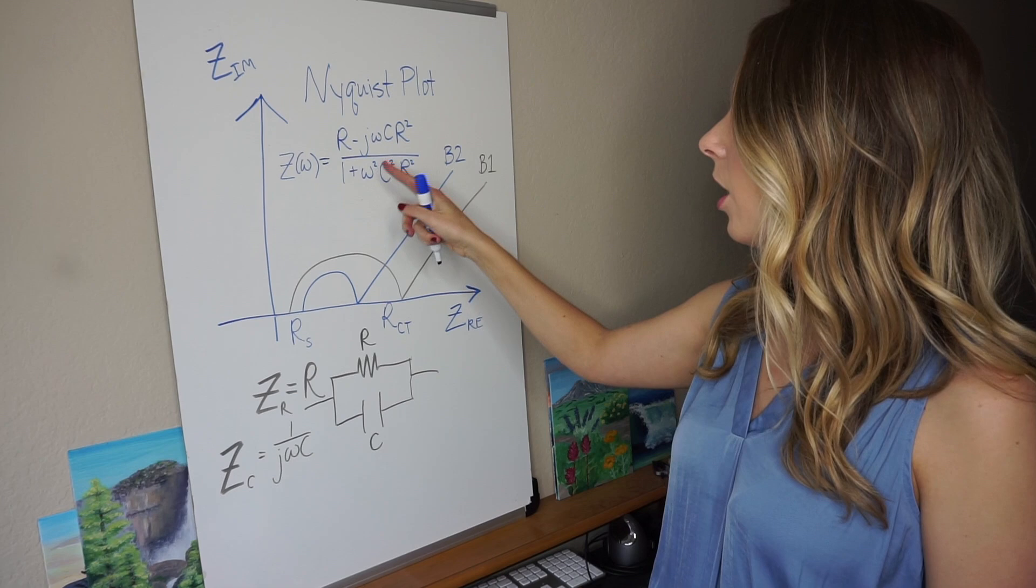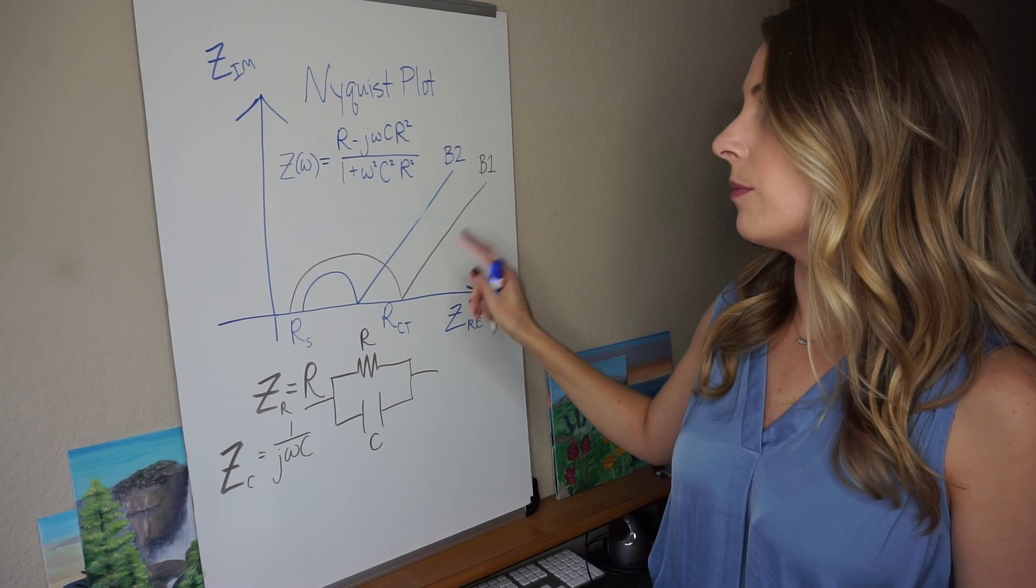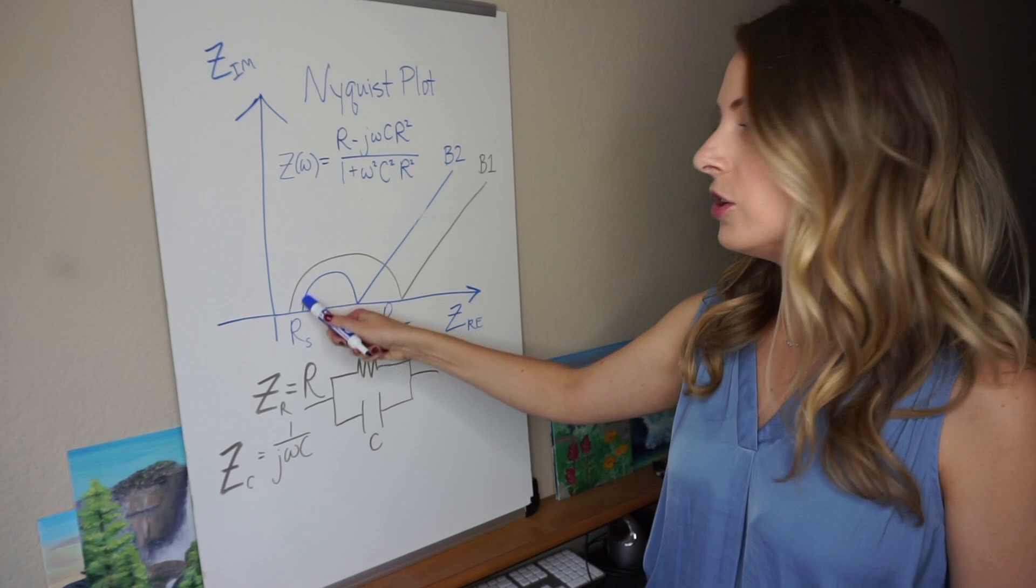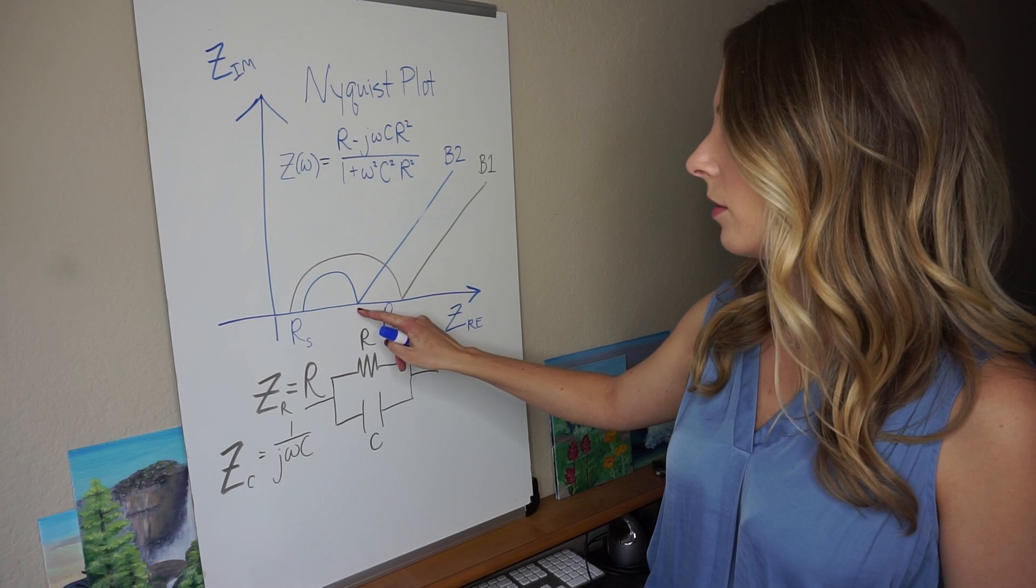So the total impedance of this system with a resistor and capacitor in parallel equals R minus j omega c r squared over one plus omega squared c squared r squared. And so as you change the frequency, you get a semicircle.